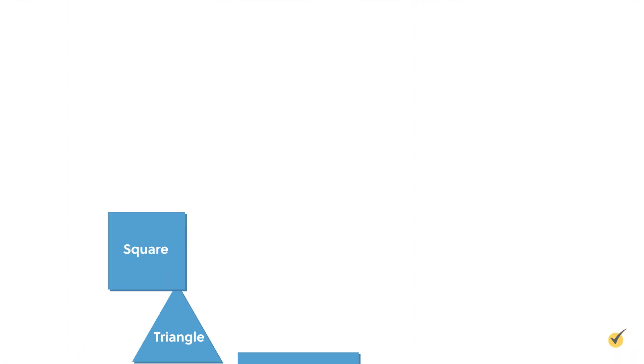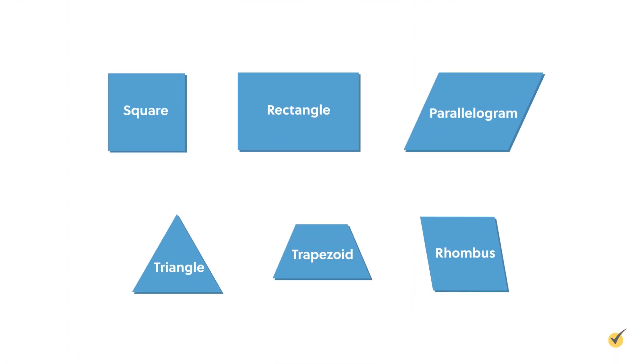To calculate the perimeter of any polygon, you add up the length of all the sides. For reference, a polygon is any two-dimensional closed shape that's composed of straight lines.